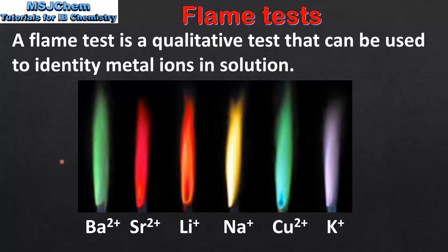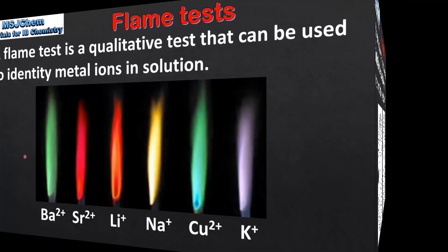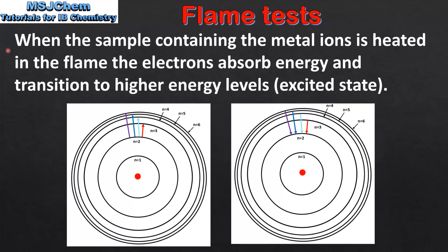Next we look at what causes these characteristic colors to be produced. When the sample containing the metal ions is heated in the flame, the electrons absorb energy and transition to higher energy levels. They are then said to be in the excited state. On the left we can see that when electrons absorb energy they transition to higher energy levels.